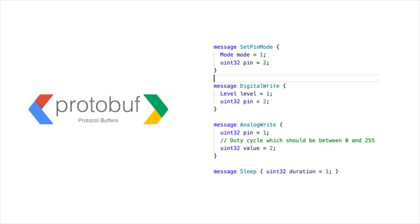The structure of our protobuf message consists of four main instructions that we think are the most used basic commands. There is set pin mode, which consists of a mode and a pin. Then digital write, which consists of a level — either low or high — and the pin where we want to write that level. Analog write is similar: it has a pin and a value for the analog write.